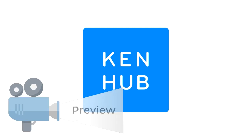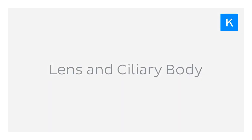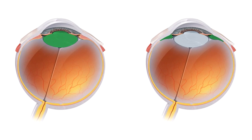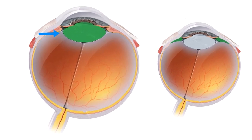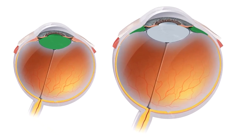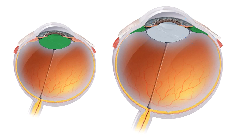Hey everyone, it's Nicole from KenHub and welcome to another anatomy tutorial. In this tutorial we're going to be talking about the lens and the ciliary body. We're going to begin by looking at these two structures. The image on the left shows a cut section of the eyeball where we see the lens highlighted in green, and the image on the right shows the ciliary body highlighted in green.